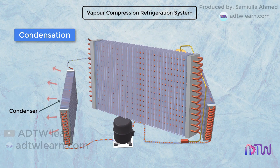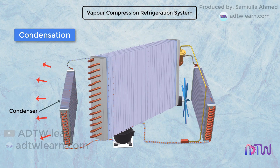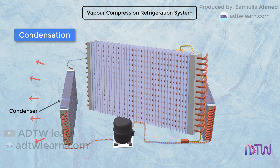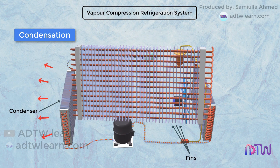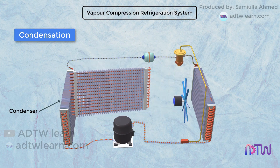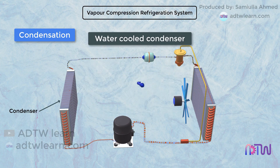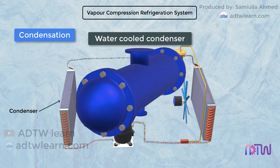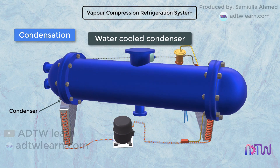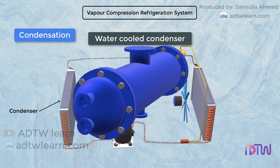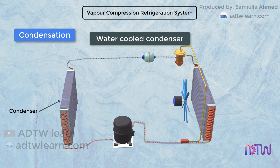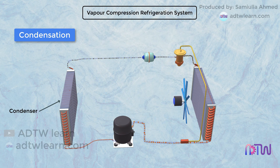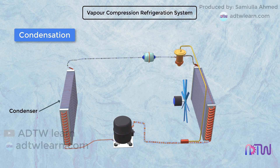Condensation of the refrigerant coming from the compressor is carried out by the condenser. The condenser is essentially a heat exchanger which rejects heat to the atmosphere. The rejection of heat can be direct to the air through fins. Another way is using water-cooled condensers, which have a cooling water supply whose function is to carry the heat from the condenser to the cooling tower, where it is further discharged to the atmosphere. The type of condenser used depends on the size of the vapor compression refrigeration system.